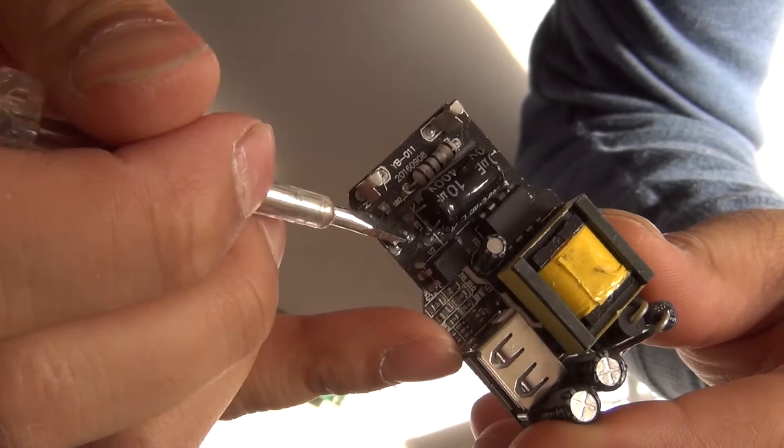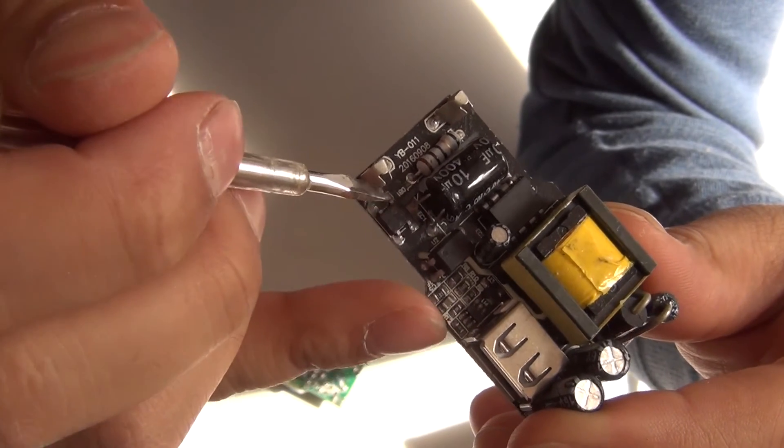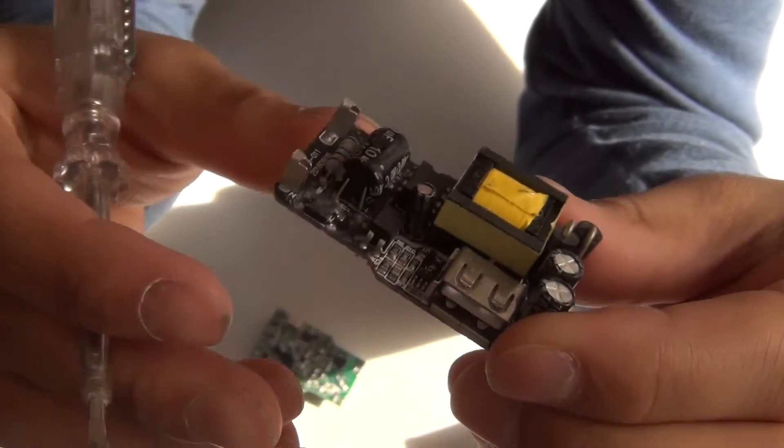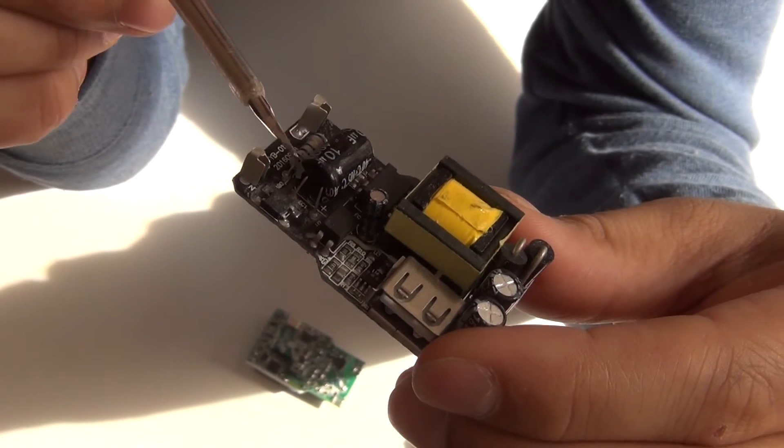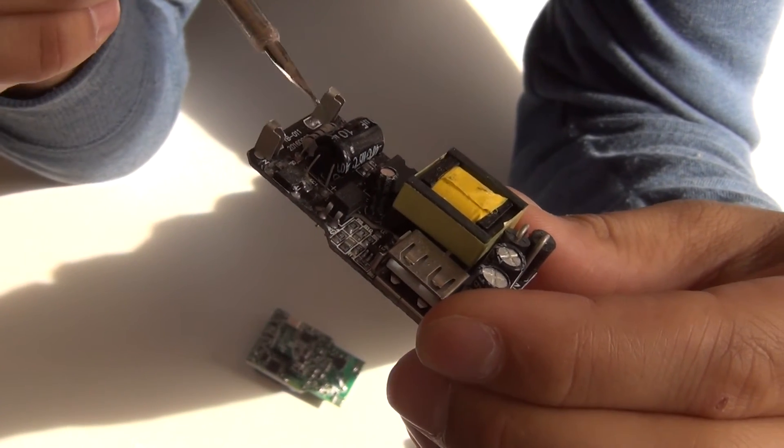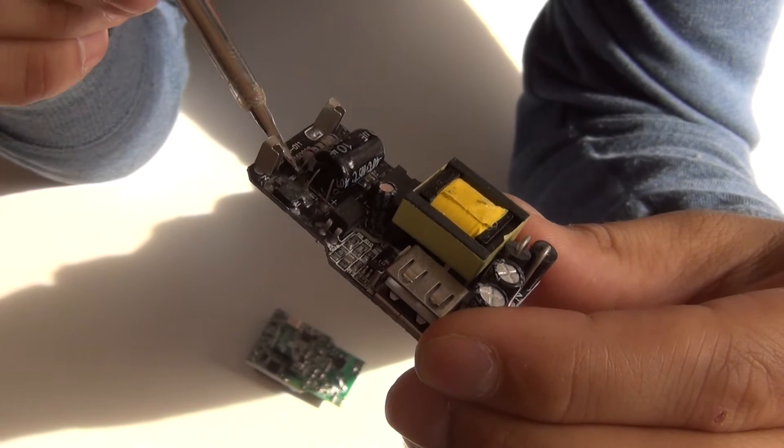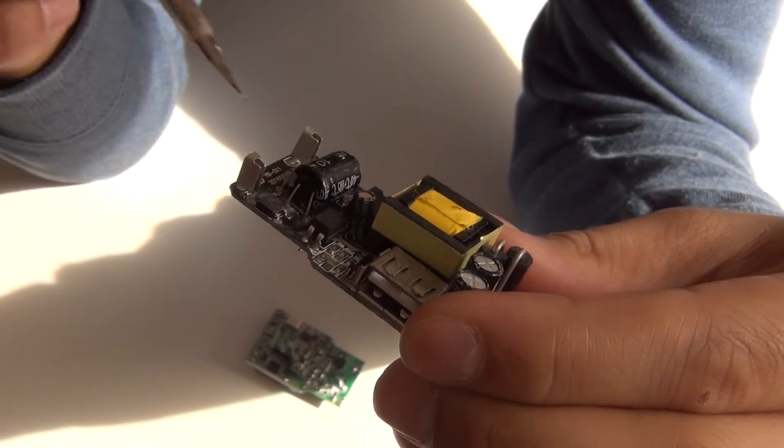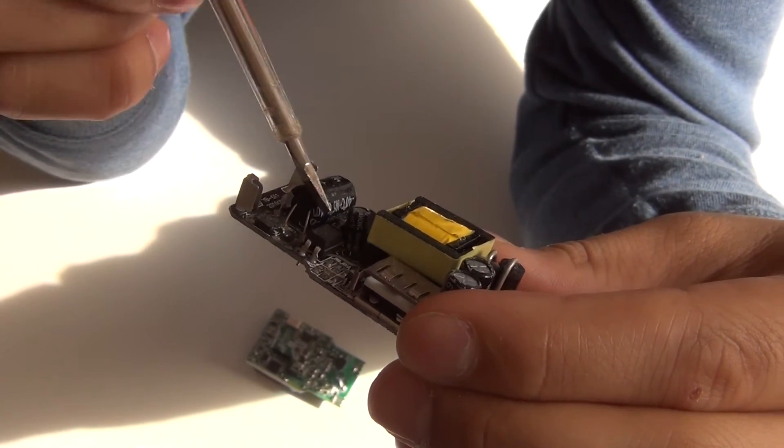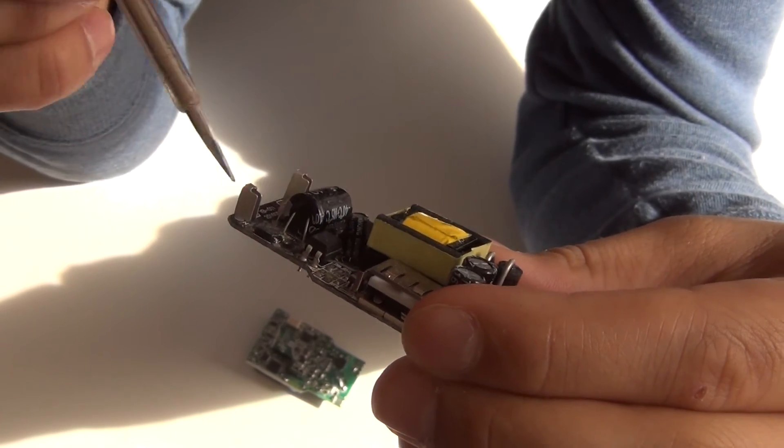As you can see, around the capacitor there's already some corrosion around it. This is actually the high voltage side, so there is around 300 volts at this side. If the corrosion starts to get bigger, there might be a short circuit causing the fuse to blow.